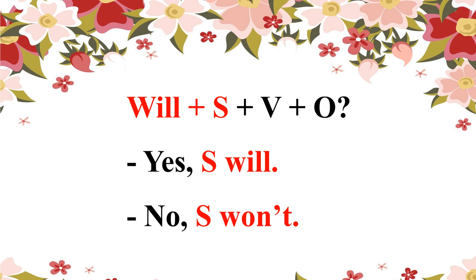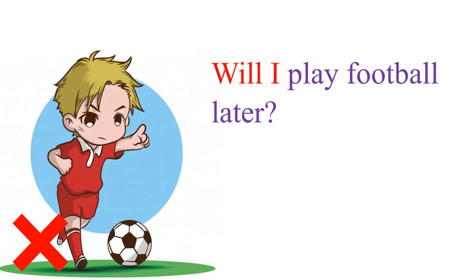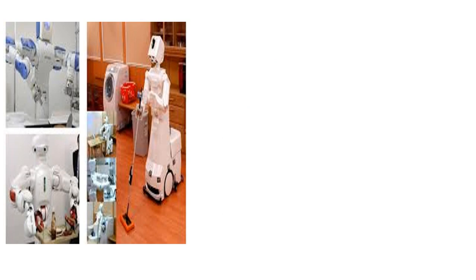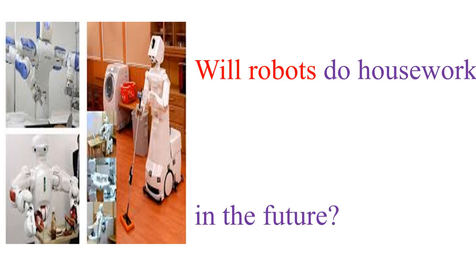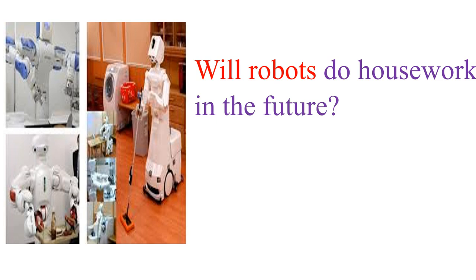You just need to move the subject in front of 'will' or 'won't' for the correct answer. Example: 'Will I play football later?' — there is a cross, so the answer is 'No, I won't.' Next example: these are robots. 'Will robots do housework in the future?' — 'Yes, they will.' Robots is plural, so you use 'they will.'